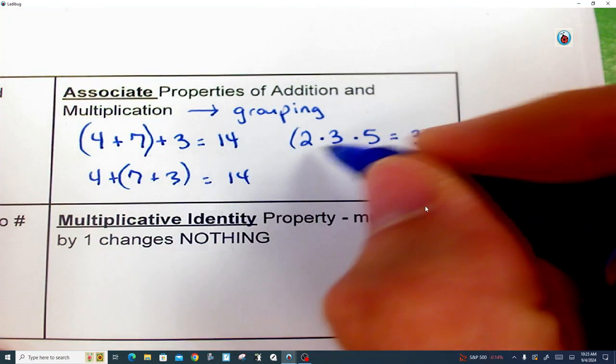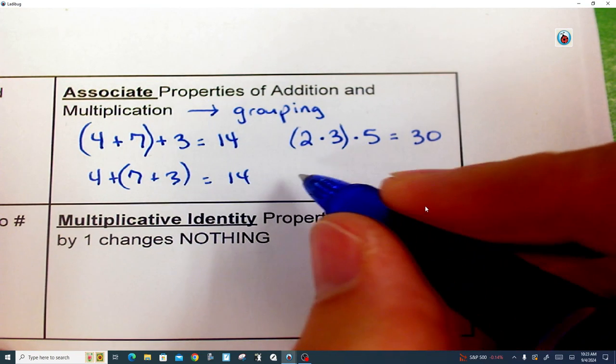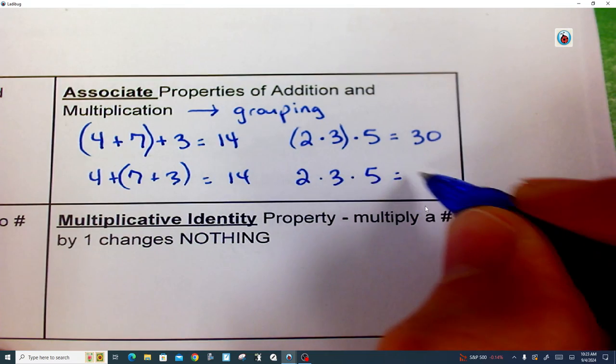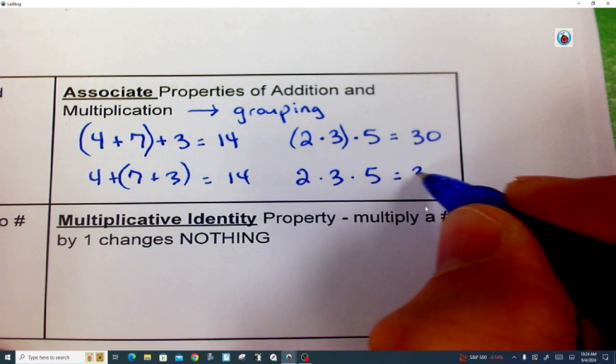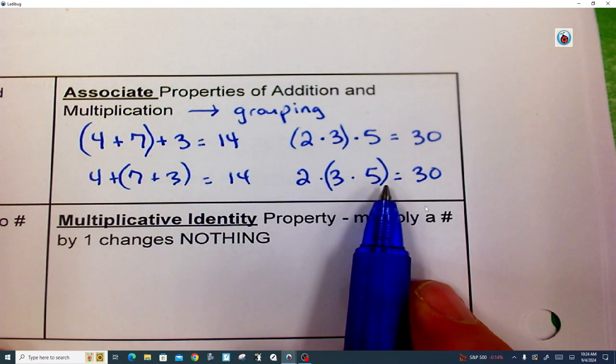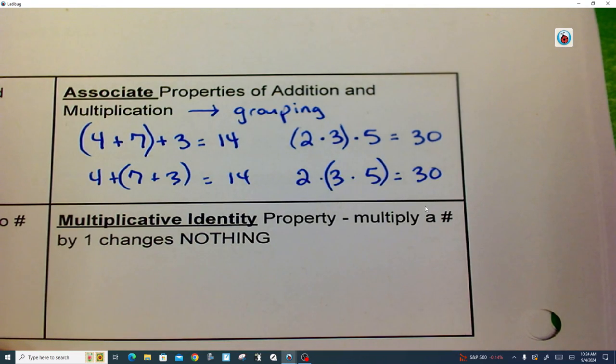The same thing's happening up here from the multiplication. If we said, hey, could you please do 2 times 3 first? Okay, that's 6. 6 times 5 is 30. That's not a big deal. And again, we're not changing the order that the multiplication is written in. What we're changing would be, what would you do first? So if I say, could you do 3 times 5 is 15? 15 times 2 is 30. That is the associative properties of addition and multiplication.